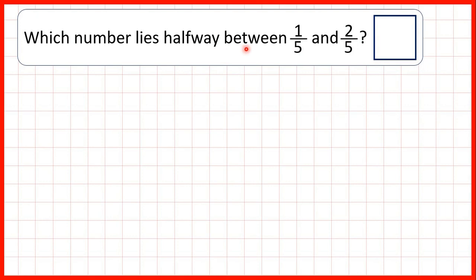Which number lies halfway between one-fifth and two-fifths? Well, we know that the number halfway between one and two is one-and-a-half, but we can't write one-and-a-half-fifths because we can't have a fraction within a fraction. But what we can do is find equivalent fractions for both one-fifth and two-fifths.